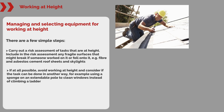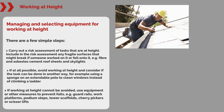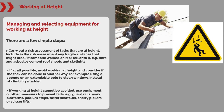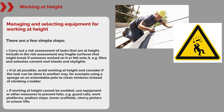For example, using a sponge on an extendable pole to clean windows instead of climbing a ladder. If working at height cannot be avoided, use equipment or other measures to prevent falls — for example, guardrails, work platforms, podium steps, tower scaffolds, cherry pickers or scissor lifts.